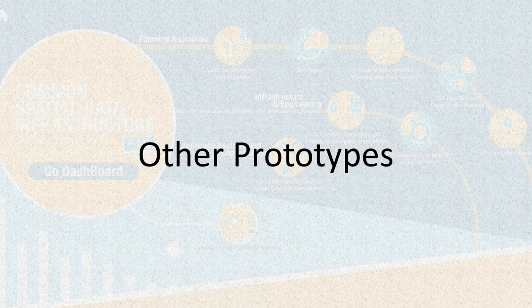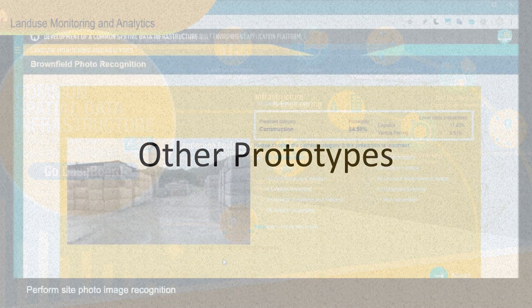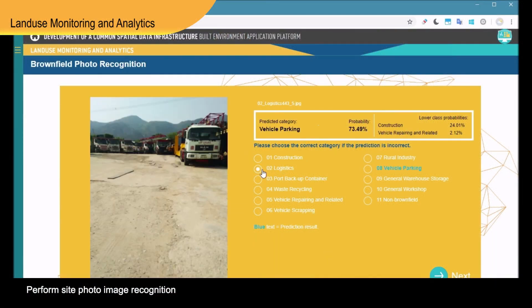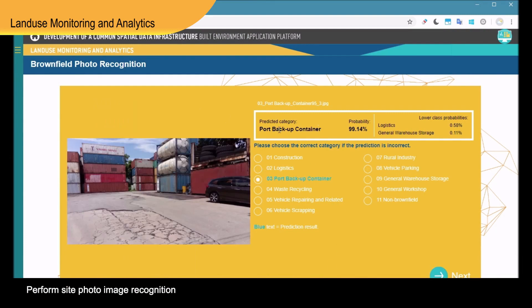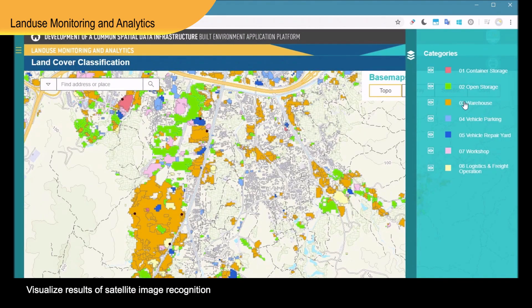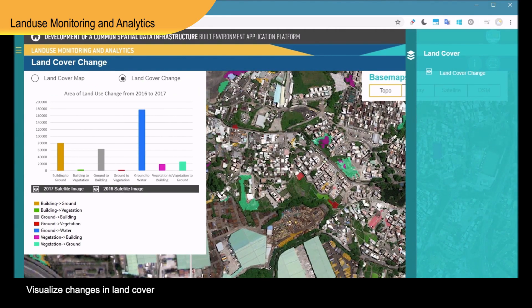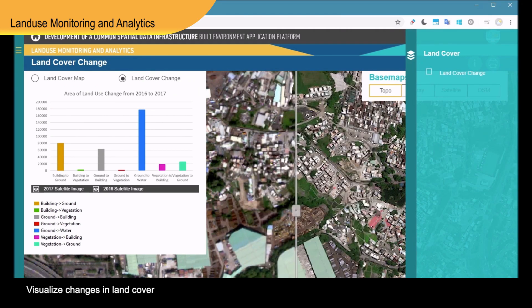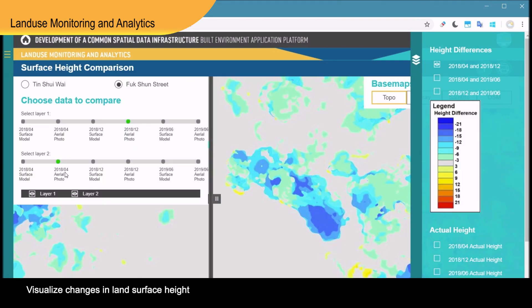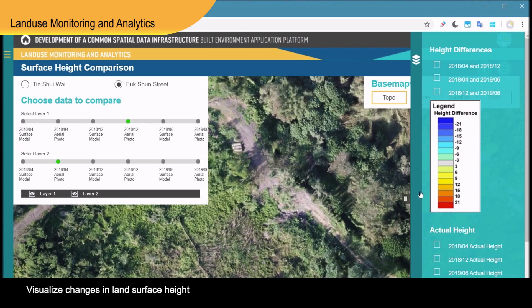Other prototype applications, anticipated to be gradually implemented in the medium- and long-term, include: Land Use Monitoring and Analytics, which provides a platform for storage and retrieval of multi-date, multi-level, and multi-source imagery data from various providers including government departments and external sources. It performs site photo image recognition using AI and machine learning for identifying types of land use, and visualizes changes to land cover and land surface height.